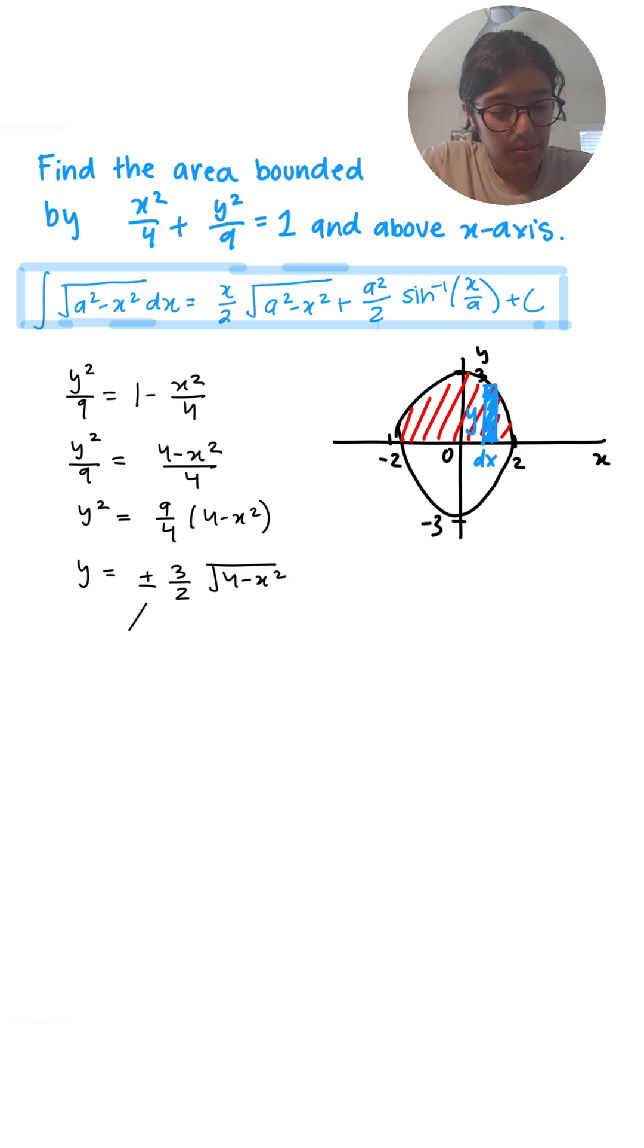The reason I put plus or minus over here is because if you take a square root we have plus or minus. We don't really need to worry about that too much because this top part is actually going to be the positive of that and this bottom part is going to be the negative. But we're not even concerned about the bottom part so we're just going to use the positive part.